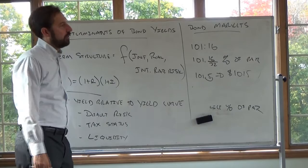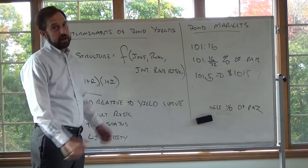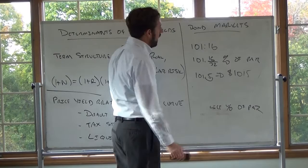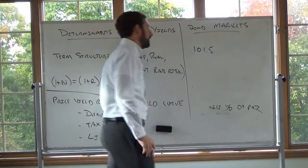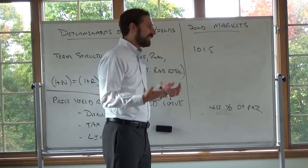The 32nds convention — the number 32 may have historical meaning from when money was gold. You'd have a coin, break it in half, then quarters, eighths, sixteenths, 32nds — that's kind of where this comes from. Corporate bonds are quoted differently: they're quoted the same way, they just don't use the 32nds convention. So a corporate bond would just be 101.5 — you still know it's percent of par, so again $1,015.